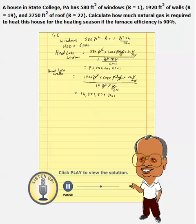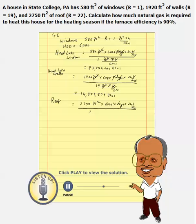Now we need to calculate roof heat loss. We use the same formula. The area is 2,750 ft², HDD is 6,000 degree-days, and there are 24 hours in a day, divided by the R value, which is given as 22 ft²·°F·hr/BTU. Canceling units, we get 18,000,000 BTUs from the roof.